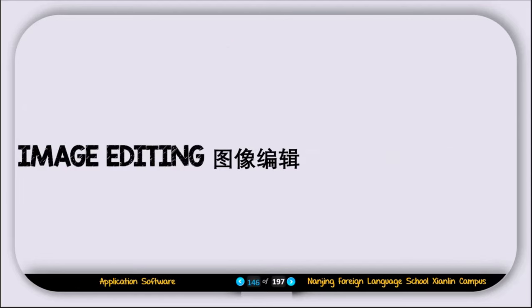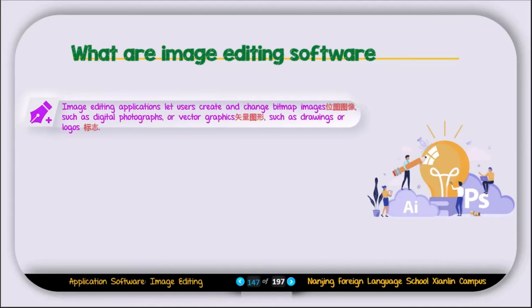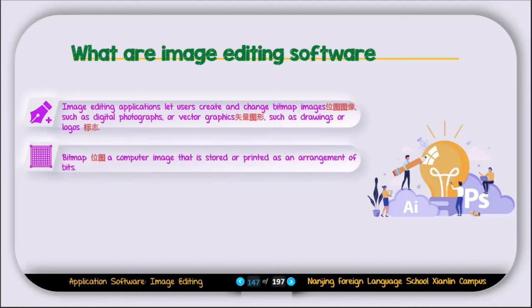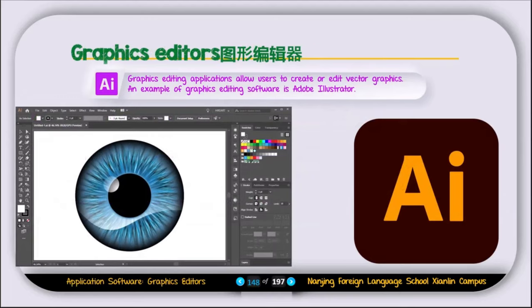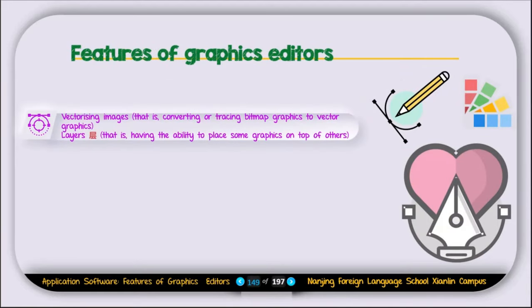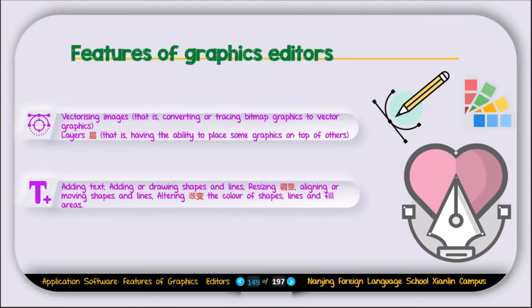The next type of application software is image editing software. Image editing applications let users create and change bitmap images such as digital photographs, or vector graphics such as drawings or logos. A bitmap is a computer image stored or printed as an arrangement of bits. A vector graphic is a graphical image made up of points and lines. Graphic editing applications allow users to create or edit vector graphics — an example is Adobe. Features of graphic editors include converting or tracing bitmap graphics to vector graphics, working with layers to place graphics on top of others, adding text, drawing shapes and lines, resizing, aligning or moving shapes, and altering the color of shapes and lines.